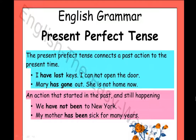The first example is: 'I have lost my keys, I cannot open the door.' 'Have lost' refers to a past action, but the sentence gives present meaning — we are now talking about not being able to open the door because the keys are lost. Second example: 'Mary has gone out, she is not home now.' 'Has gone' is a past action, and 'not home now' indicates the present result.